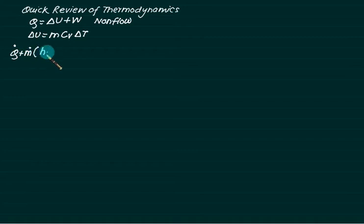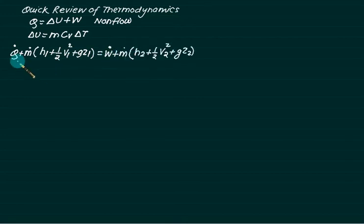For flow energy equation, we have Q dot plus M dot into H1 plus half V1 square plus GZ1 equals to W dot plus M dot into H2 plus half V2 square into GZ2. This is normally used for all steady flow devices like compressors, condenser, heat exchanger, turbine, compressor like this.